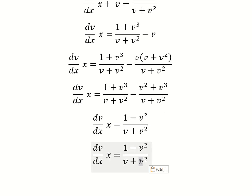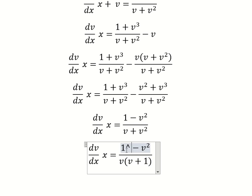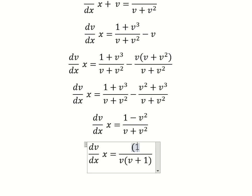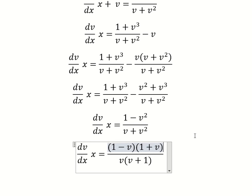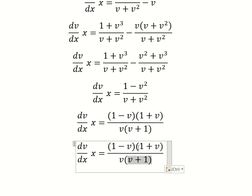Next, we can do common denominator, but here we can do factorization. We have 1 squared and this one is about identities. Now we have this one divided by this one.